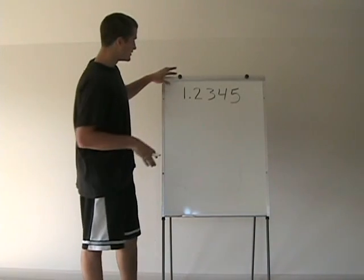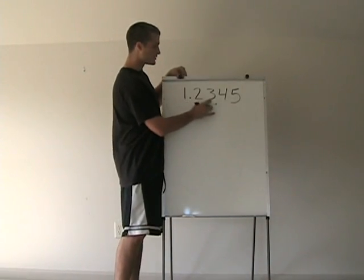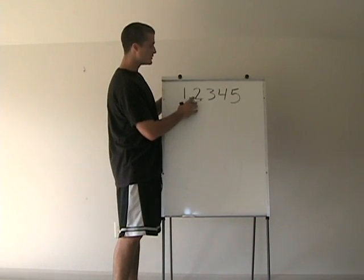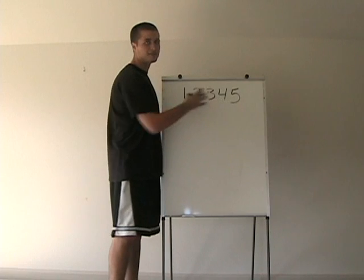When you have a decimal that looks like this one, 1.2345, it's read as 1 and 2,345 ten thousandths.